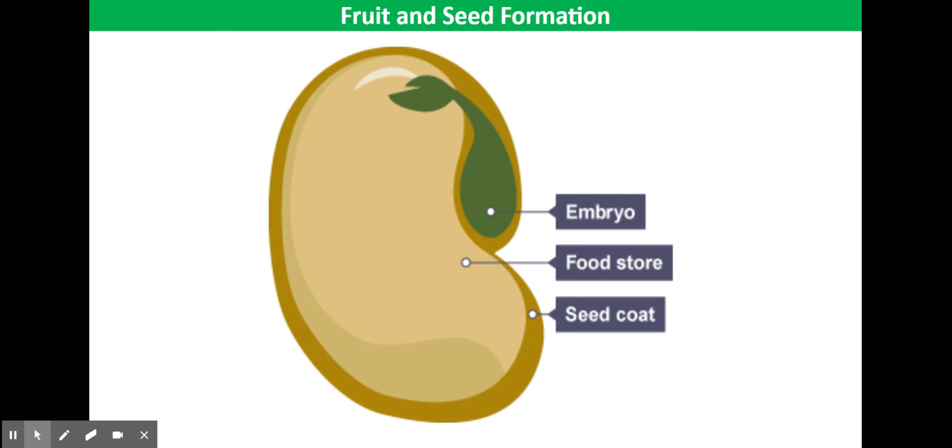The food store contains the starch for the young plant to use until it is able to carry out photosynthesis. Storing the food helps the plant survive in winter when there is little sunlight available for photosynthesis, so the seed can use it until it can photosynthesize and produce its own food.